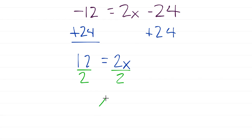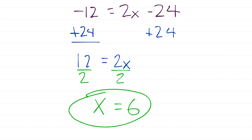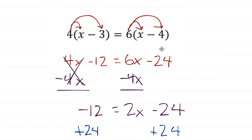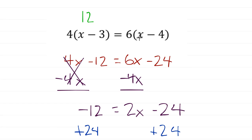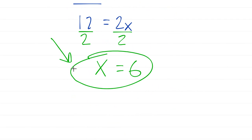From here it's straightforward — it looks just like the earlier videos on two-step and one-step equations. If you're not comfortable with those, go back a video or two and practice those first, because that's all these really are. Dividing by 2, we get x equals 6. Let's double-check: x equals 6, so 6 minus 3 is 3, 4 times 3 is 12 on the left. On the right, 6 minus 4 is 2, 6 times 2 is 12. That's a true statement — x equals 6 is correct.